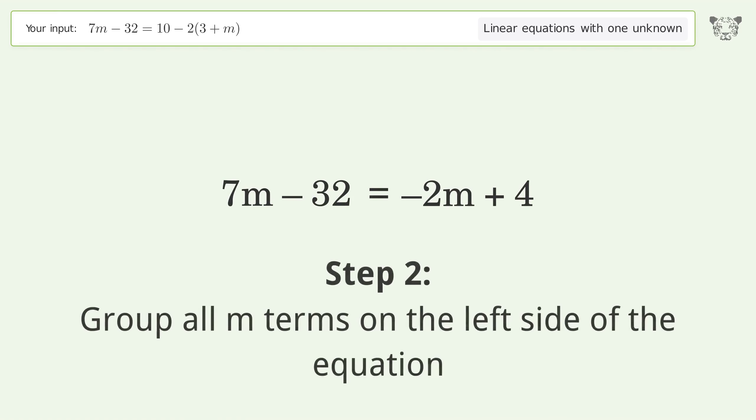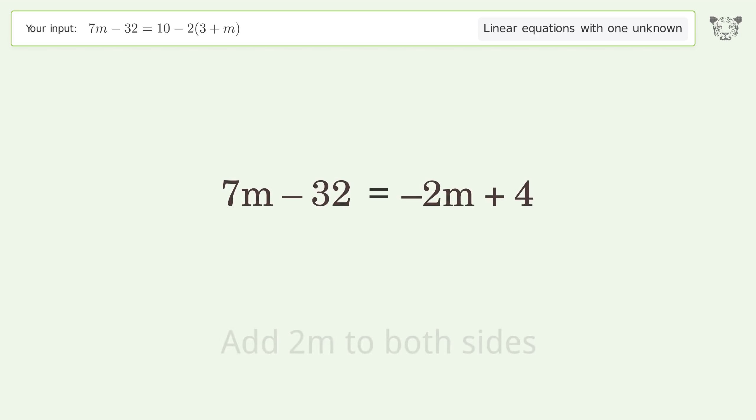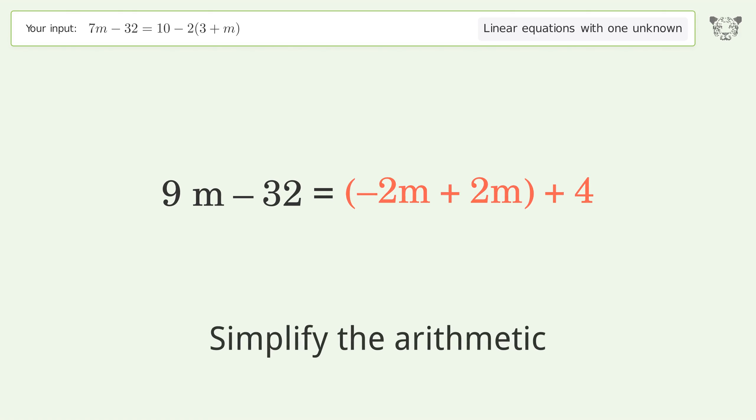Group all m terms on the left side of the equation. Add 2m to both sides, group like terms, and simplify the arithmetic.